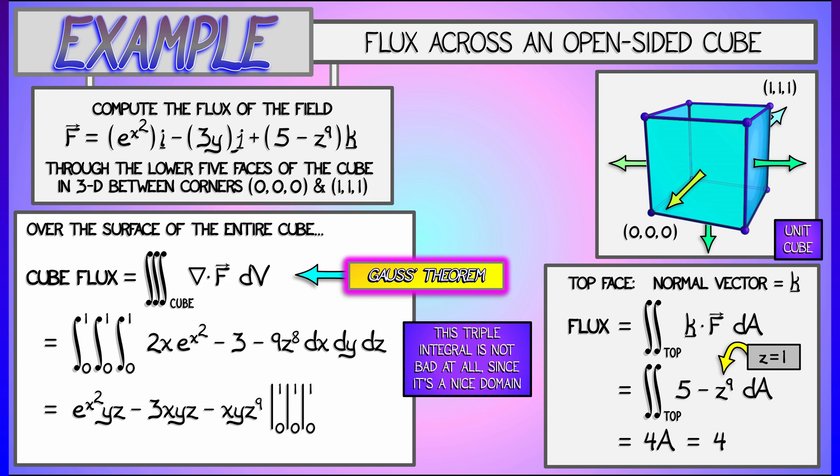Evaluate x, y, and z from zero to one, and a little bit of algebra is going to give you an answer for the flux out of this full cube as being e minus 4.